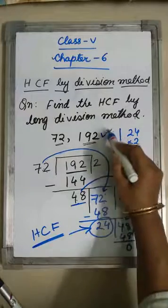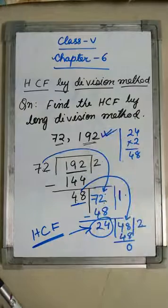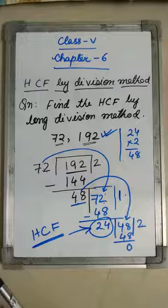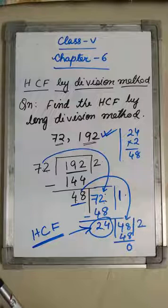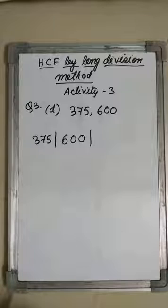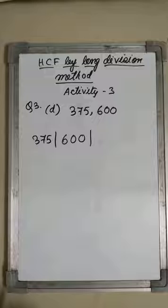Here I am taking two numbers, but you can find the HCF for three numbers or more than three also. I am going to explain one more time with another example. Our next example is to find the HCF of 375 and 600.